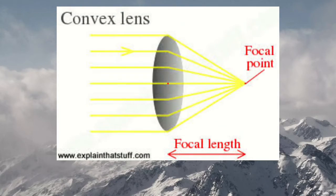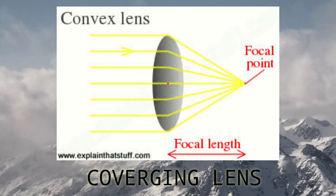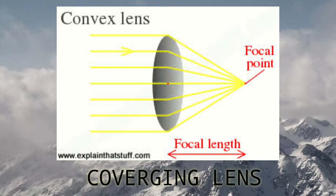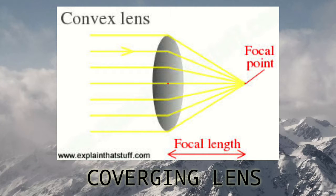First are the convex lens optics. A convex lens is also known as a converging lens. A converging lens converges rays of light traveling parallel to its principal axis. They can be identified by their shape, which is relatively thick across the middle and thin at the upper and lower edges.